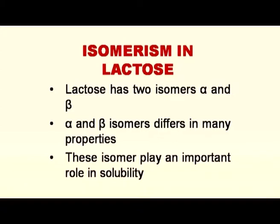Isomerism in lactose: lactose is present in milk or in whatever product it is present in two isomeric forms. One is alpha lactose and the other is beta lactose or beta isomer. These two isomers differ in many properties. These isomers play an important role in solubility of ice cream and hence in the defect sandiness.